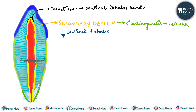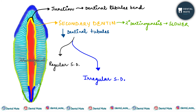The dentinal tubules present in secondary dentine could be regular or irregular based on type or orientation. Secondary dentine is similar to primary dentine but contains fewer dentinal tubules.